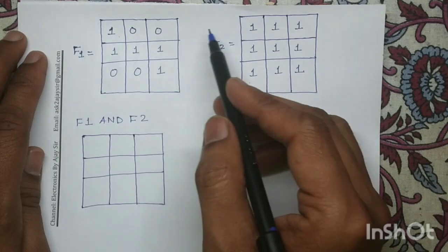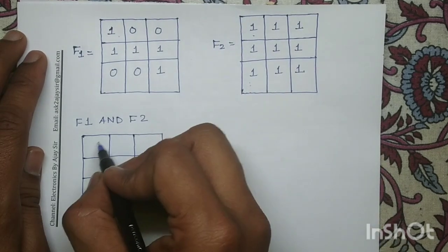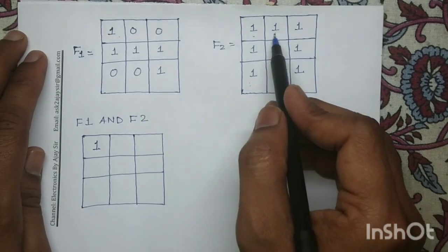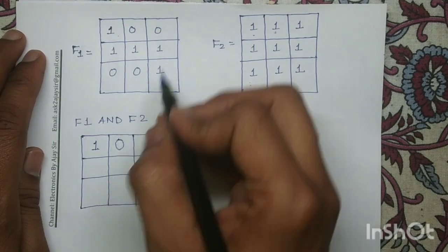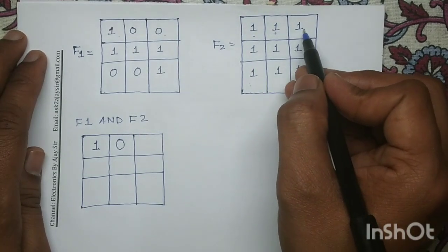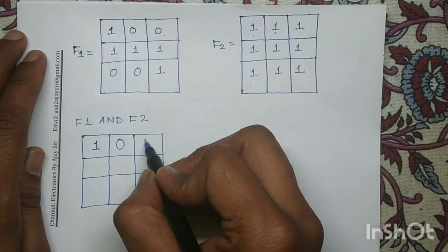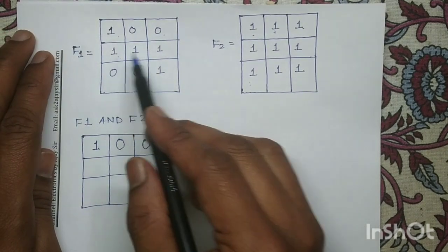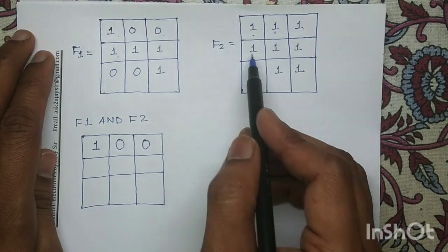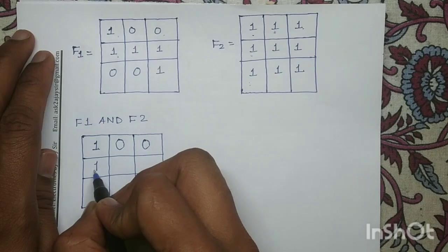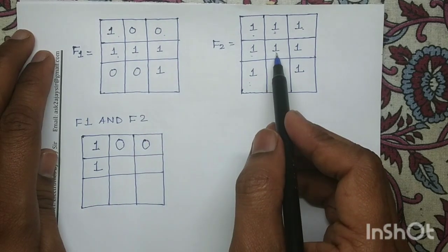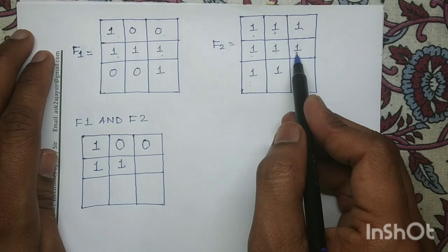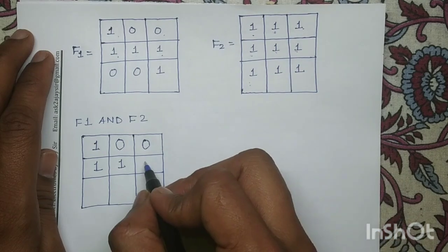1 AND with 1 gives the output 1. 0 AND with 1 gives the output 0. 0 AND with 1 gives the output 0. Similarly in the next row: 1 AND with 1 gives the output 1. 1 AND with 1 gives the output 1. 1 AND with 1 gives the output 1.